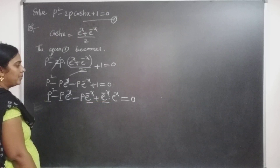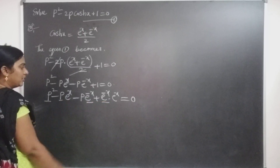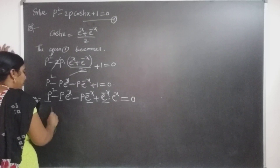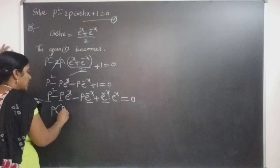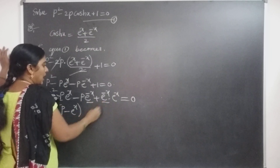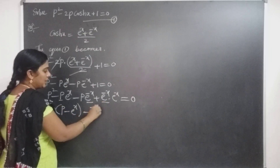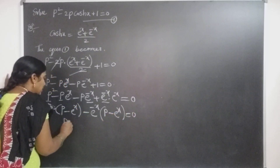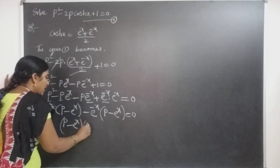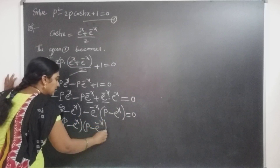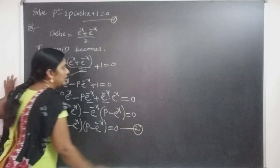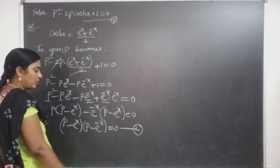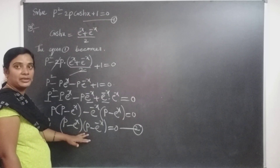Taking p common from the first two terms and taking -e⁻ˣ common from the last two terms, we can split the equation into first degree factors of p. From the first two terms: p(p - eˣ), and from the last two terms: -e⁻ˣ(p - eˣ) = 0. Therefore the factors are (p - eˣ)(p - e⁻ˣ) = 0. This is equation 2.